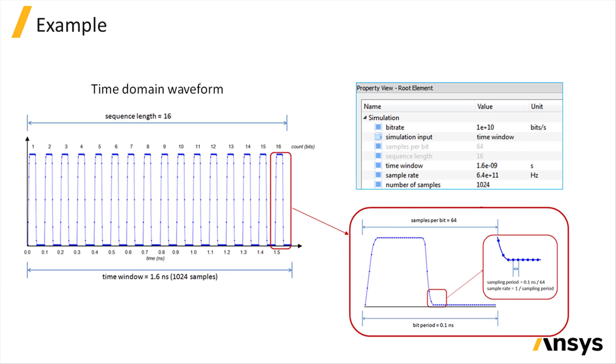To understand the various simulation properties available and how they are related, let's take a look at an example. In this example, the time window is set to 1.6 nanoseconds.